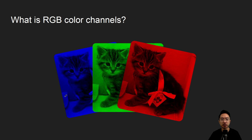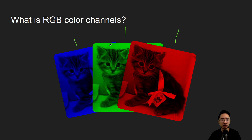So what is RGB color channels? When you have an image, you'll usually have three channels: blue, green, and red. But with OpenCV you actually have BGR instead, so the order is flipped. Depending on which program you're using, you may have different channel order conventions, but there's a simple command to switch the order.